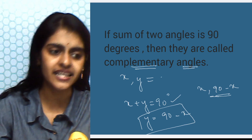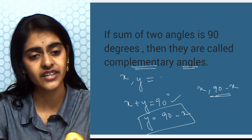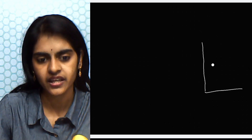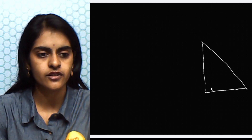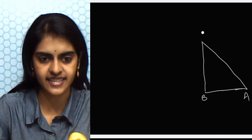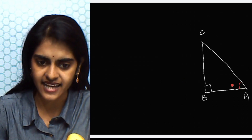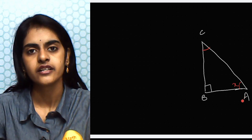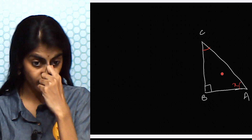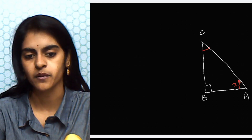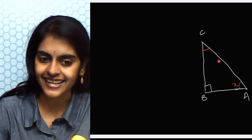Now we shall see the trigonometric ratios of complementary angles. We have learned the six trig ratios: sine, cos, tan, cosecant, secant, and cot. Let us first write those ratios with reference to an angle. Let me take a right angle triangle ABC, right-angled at B. In any triangle the sum of angles is 180°, and since one angle is 90°, the other two angles together must sum to 90°.